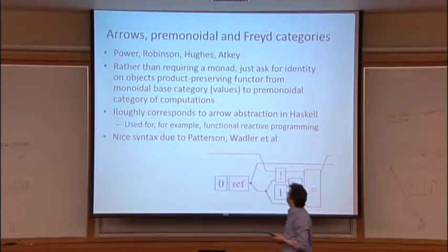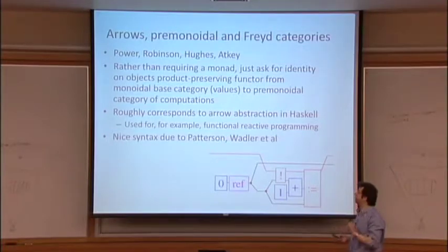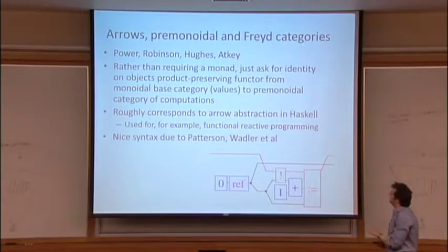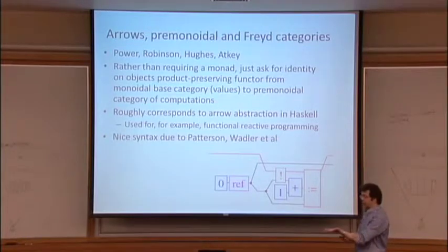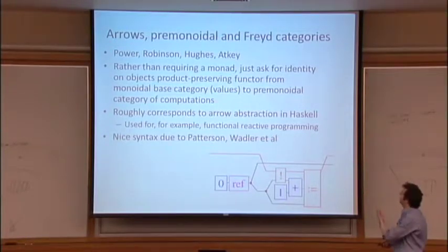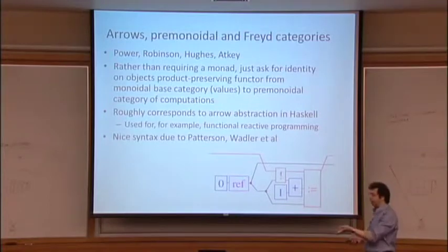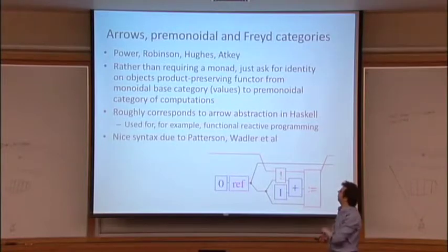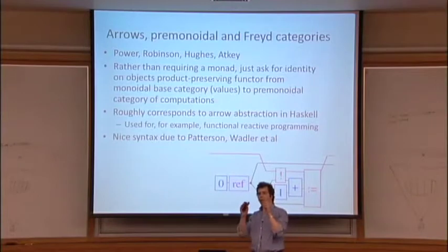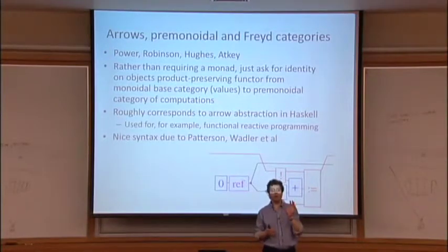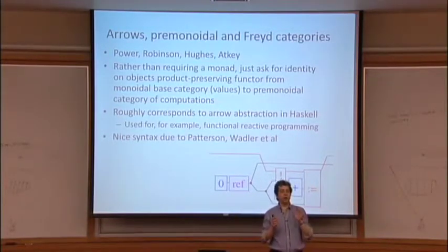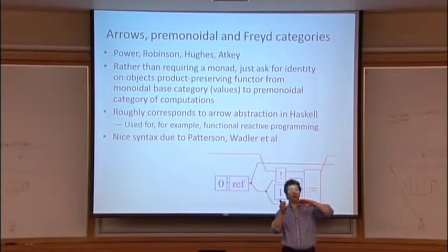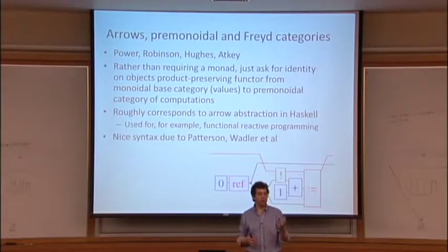If you only ask for something weaker, you can come up with a notion of having a category of values and over that a category of computations. You require some product structure — monoidal or Cartesian — in the category of values. The category of computations behaves like the Kleisli category does in the case of monads, but we don't need a functor coming back the other way. Such things are called pre-monoidal categories, or Freyd categories when the base is Cartesian.